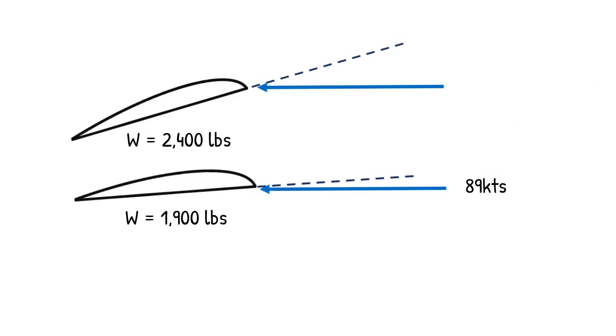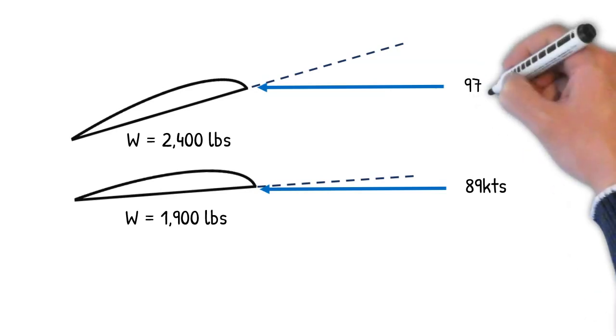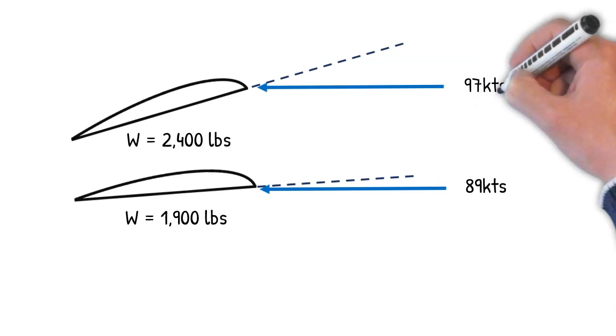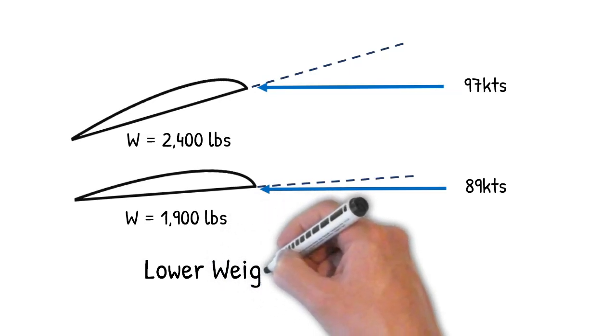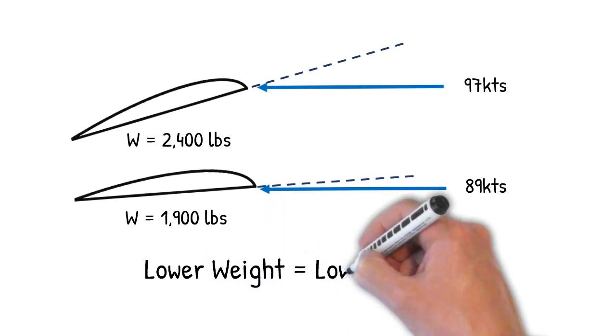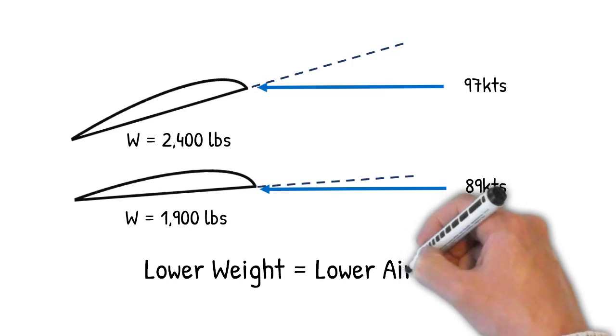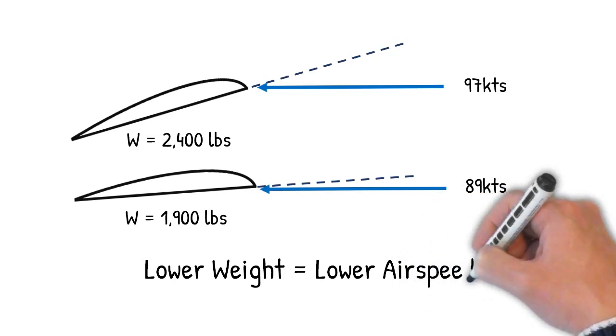For aircraft that don't have multiple Va speeds, it's most likely the manufacturer just selected the lightest weight and used that weight to calculate their Va or maneuver speeds. If you liked this video, be sure to give it a thumbs up and share it with friends. Also, in the comments below, let me know what kind of video you'd like to see next.